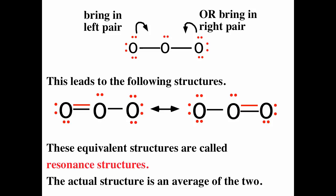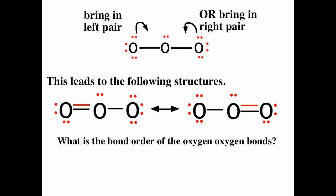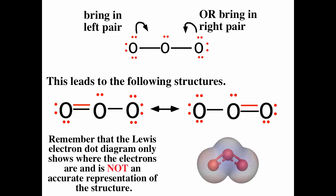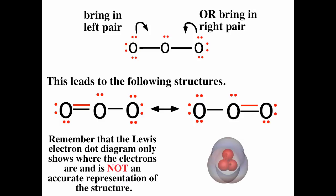For resonance structures, the actual structure is a weighted average of all the resonance structures. For ozone, what is the bond order of the oxygen-oxygen bonds? Using the equation: bond order = ½ × (number of electrons being shared) / (bond regions). We're sharing six electrons total across two bond regions, so bond order = ½ × (6/2) = 1.5. Alternatively, take the average of bond orders: (2 + 1) / 2 = 1.5. The actual structure of ozone has a bond order of 1.5 for each oxygen-oxygen bond, represented by a dashed line, and both bonds are absolutely equivalent.